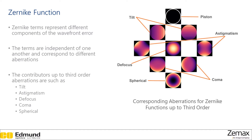The different terms represent different components of the wavefront error. They correspond to different aberrations that are present in optical systems. Here we have a few of them mapped out up to third order, like astigmatism, defocus, coma, and spherical aberrations.